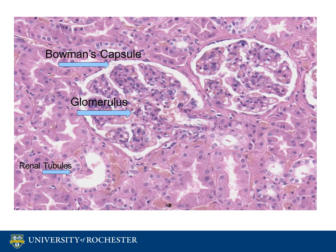Mesangial cells can be identified. These are a type of myofibroblastic cell which functions to support and regulate the glomerular tuft. We can also identify that there is flattened parietal epithelium which lines Bowman's space. From the capsular space, the filtrate passes through a channel into the renal tubule, which is a series of ducts in the nephron.